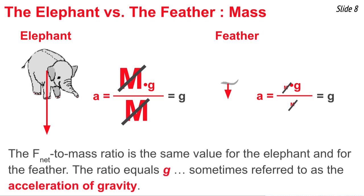So what we notice is the ratio of net force to mass is the same for both of these objects. In fact, if the only force is gravity, that's always the case, that the acceleration comes out to be 9.8 meters per second squared, a value that we sometimes refer to as the acceleration of gravity.